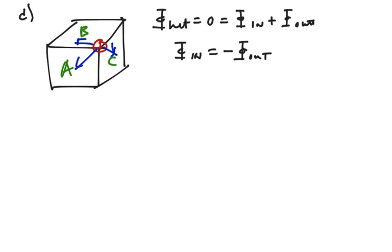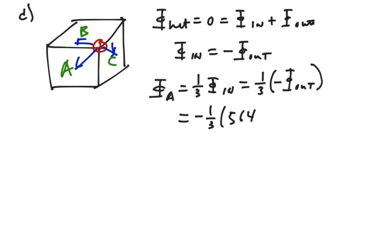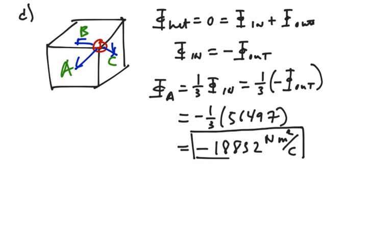And now we know that flux going in is equally shared between A, B, and C. So the flux that's going into A will be one-third of the flux that's going in, and hence that's going to be one-third of the negative flux that's going out. We just calculated the flux that was exiting going out, so this flux in A is going to be negative one-third times 56,497, and that will be negative 18,832 newton-meter-squared per coulomb. The negative sign means that those flux lines are actually going into the closed surface, and that would be an entering flux.